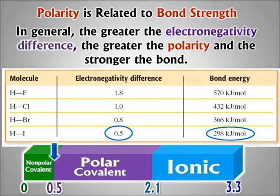That unit might be unfamiliar, but since they're all in the same unit, we can just compare the numbers. Now let's jump to the bond between hydrogen and fluorine. Fluorine has the gold medal for the highest electronegativity in the whole universe, so it's going to have a bigger difference between it and hydrogen, which is one of the lowest electronegativities for non-metals.